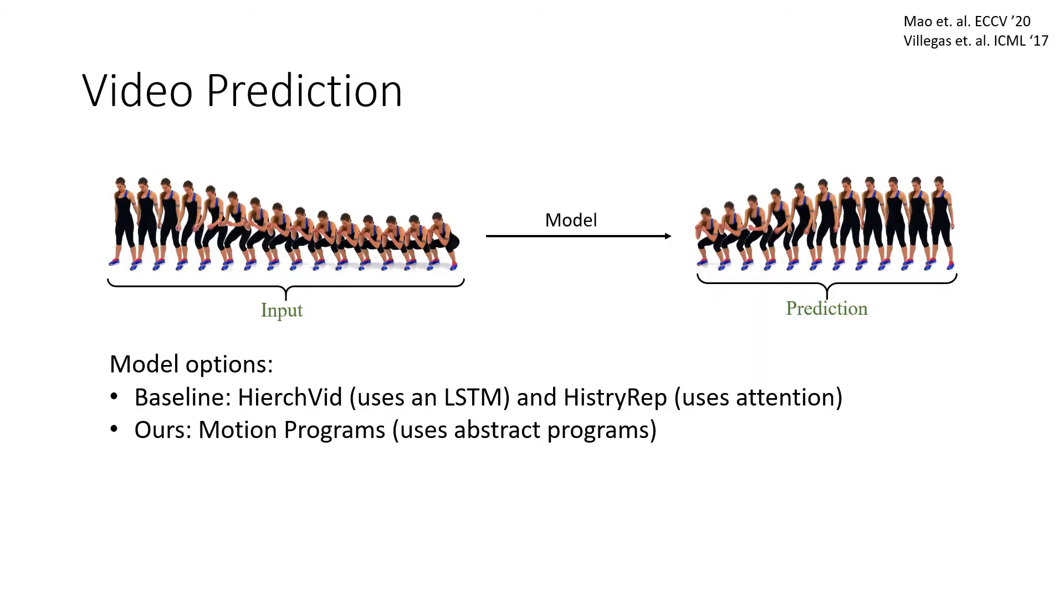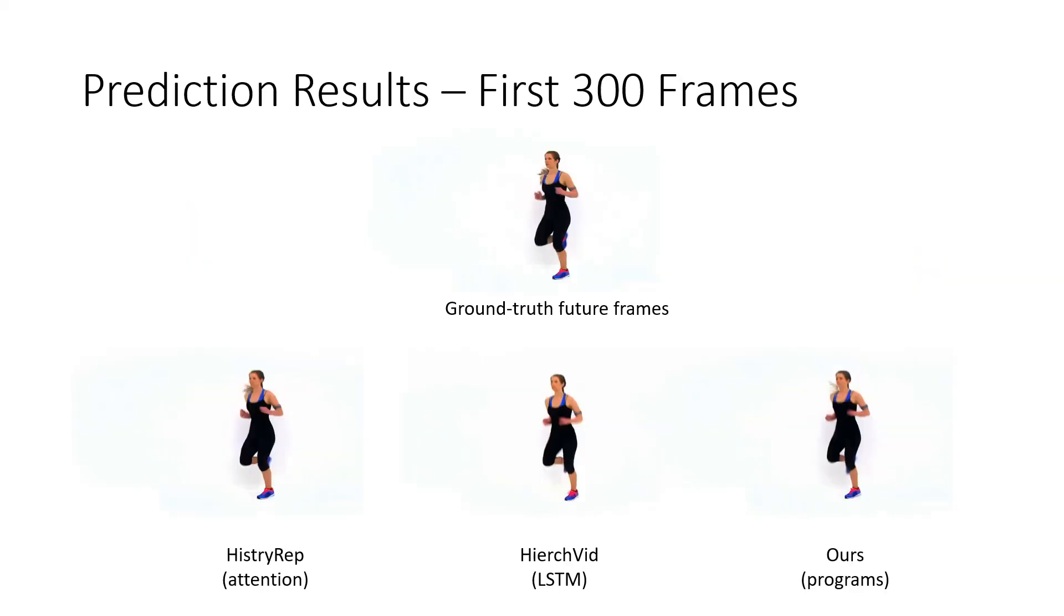We also leverage motion programs to perform video prediction. We compare it to two standard baselines which use LSTM and attention respectively. Here are the prediction results for a simple jogging motion for the first 300 frames. We observe that all three models do well, with the baselines even doing slightly better at times by predicting smooth future pose transitions.